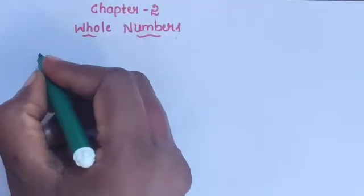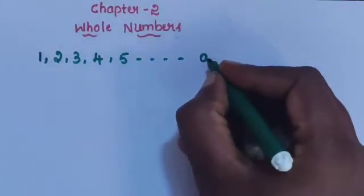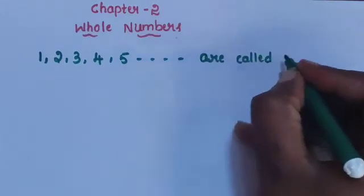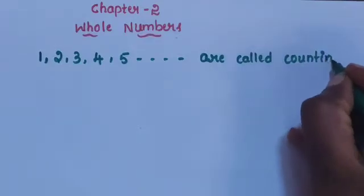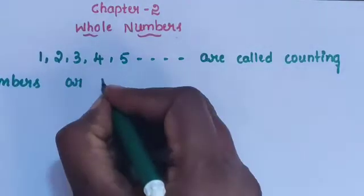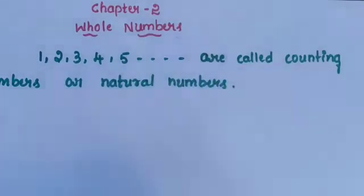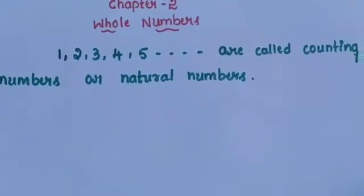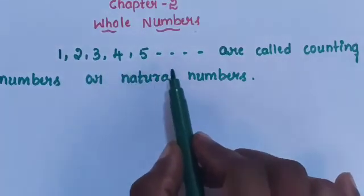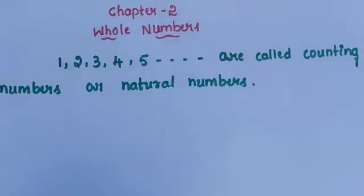Hi children, today I explain about the new topic for numbers. You already know about numbers. The numbers starting from one, two, three, four, five and so on are called counting numbers or natural numbers. Natural numbers are represented by a letter.